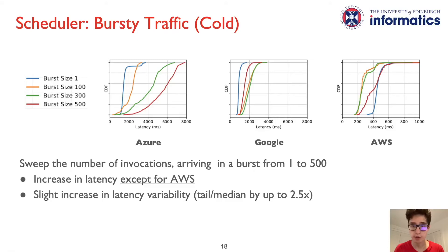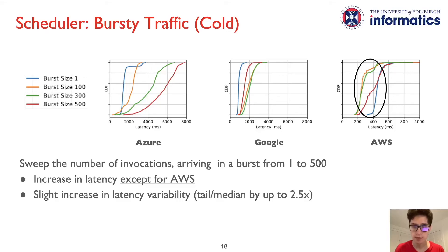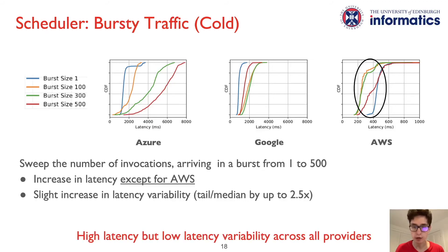We now investigate the behavior of serverless clouds in the presence of burst function invocations, varying the number of invocations in a burst. We notice an overall increase in latency as the burst size increases, which is most pronounced for Azure compared to Google and AWS. Moreover, for AWS, the response time actually decreases with large burst sizes, which is counterintuitive. We believe this phenomenon is due to an internal optimization where the cold start of the first invocation speeds up the cold starts of the other invocations in the same burst. Despite the increased latencies with large burst sizes, all providers show moderate latency variability with a tail-to-median ratio less than 3.